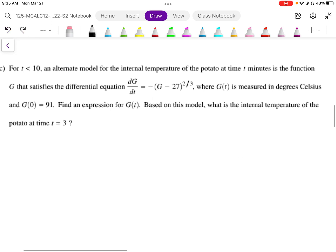We've been given an initial condition and we need to separate the variables and integrate. First, we separate the variables. So dG, the G's are going to go with the dG, so we end up with dG over (G minus 27) to the power of 2/3. That's going to equal negative dt.